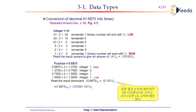0.750 × 2 = 1.500. The digit before the decimal point is 1. Then take 0.500 and multiply by 2 to get 1.000. The digit before the decimal point is again 1.